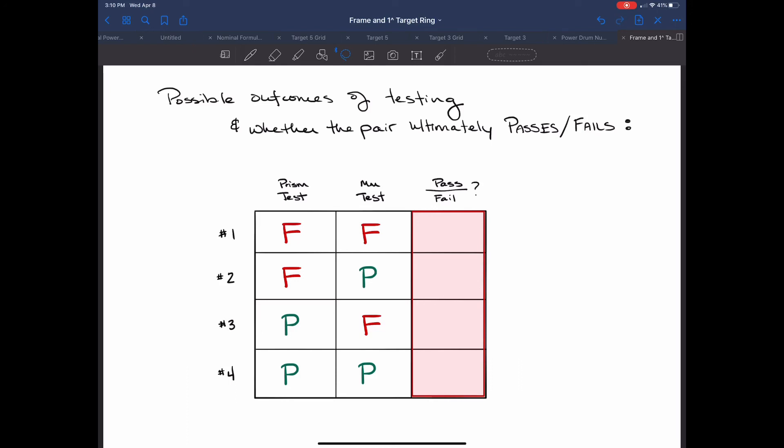Now I want to look at some different possible outcomes from the testing and whether the pair will ultimately pass or fail. It has to fail both the prism test and the millimeter test. This situation is very much like the previous example. Because we have a fail from the prism test and fail on the millimeter test this pair will ultimately fail.